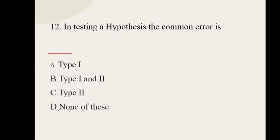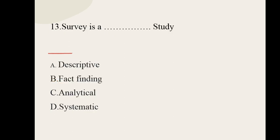Question number twelve: in testing a hypothesis, the common error is dash. Options: type one, type one and two, type two, none of this. The correct option is type one and two. Question number thirteen: survey is a dash study. Options: descriptive, fact-finding, analytical, systematic. The correct option is fact-finding.